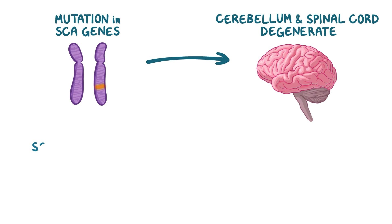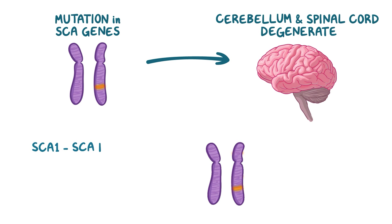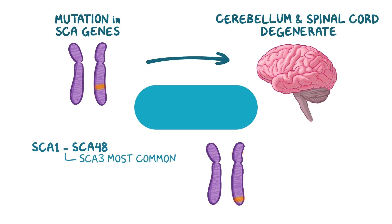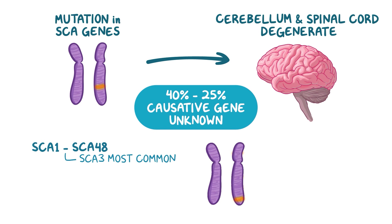There's SCA1 through SCA48, with SCA3 being the most common type. However, in about 40% to 25% of cases, the causative genes are still unknown.